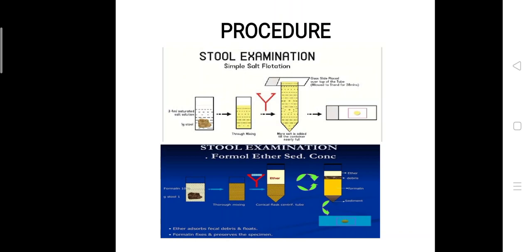Now we will discuss the formalin-ether sedimentation method. The principle: this sedimentation technique uses solution of a lower specific gravity than the parasitic organism, which concentrates the latter in the sediment. It takes advantage of the high specific gravity of protozoan cysts and helminth eggs compared to water.